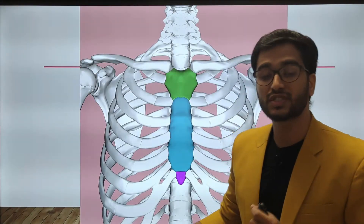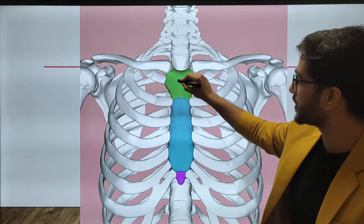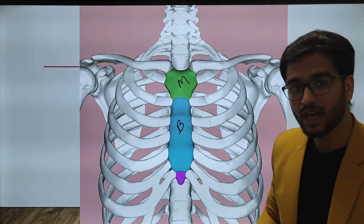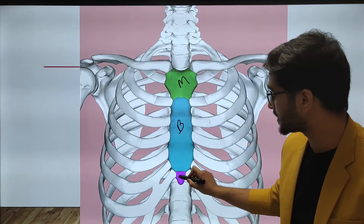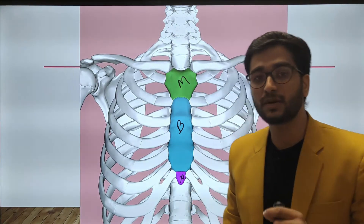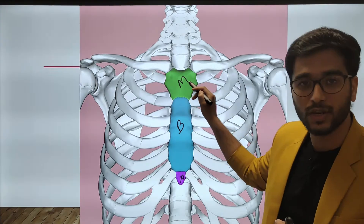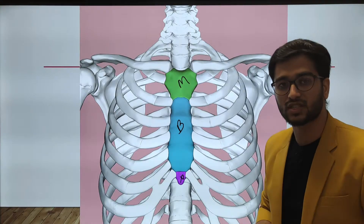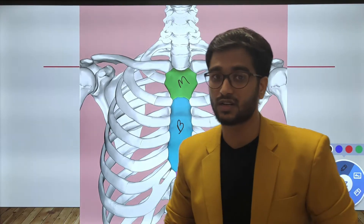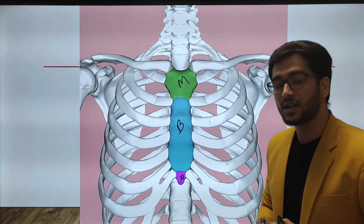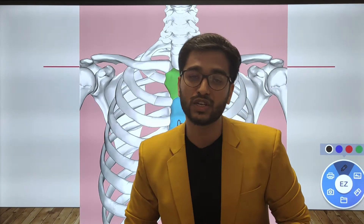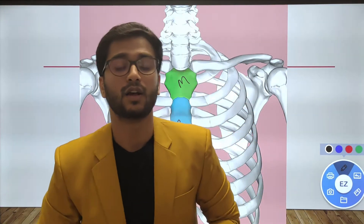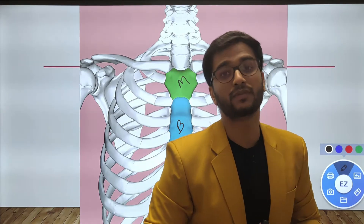The sternum can be divided into three components. The superior one is known as the manubrium, the middle one is the body of the sternum, and the lower one is the xiphoid process. The junction between the body of the sternum and the manubrium is known as the manubriosternal junction, and the junction between the body and the xiphoid process is the xiphisternal junction. The sternum makes a vital role in the articulation of ribs as well as the clavicle, although the clavicle is part of the appendicular skeleton while the ribs are part of the axial skeleton.